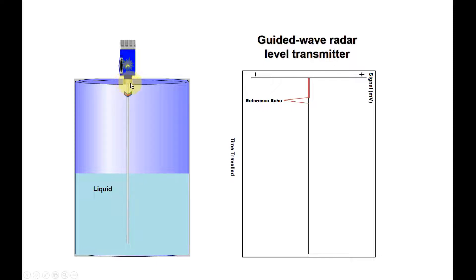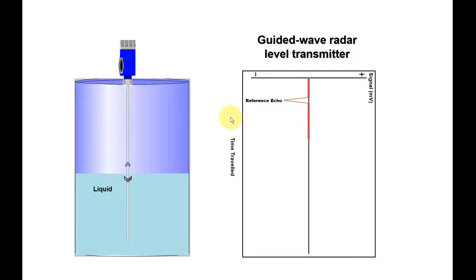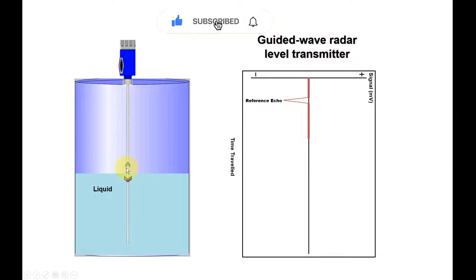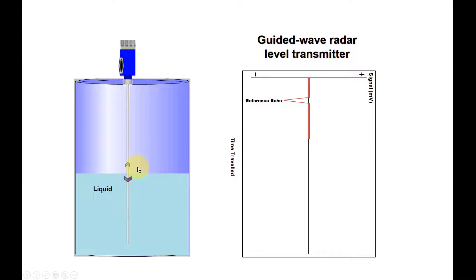Near the flange of the level transmitter, the radar signal will continue to travel across the level probe, and you can see the signal or the waveform moving this way. It continues to move until it reaches the liquid surface. Then you can see the echo or the radar signal bounce back, because here there is a liquid surface — the signal bounces back due to the difference in density or dielectric constant.